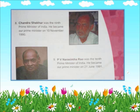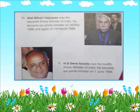P.V. Narasimha Rao was the tenth Prime Minister of India. He became our Prime Minister on 21st June 1991. Atal Bihari Vajpayee was the eleventh Prime Minister of India. He became our Prime Minister on 16th May 1996, and again on 19th March 1998.